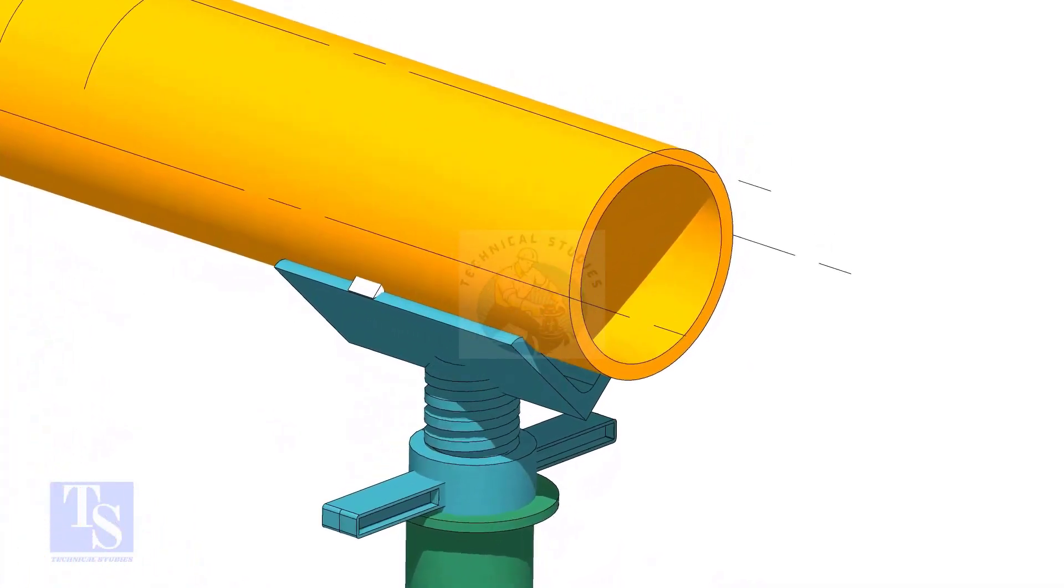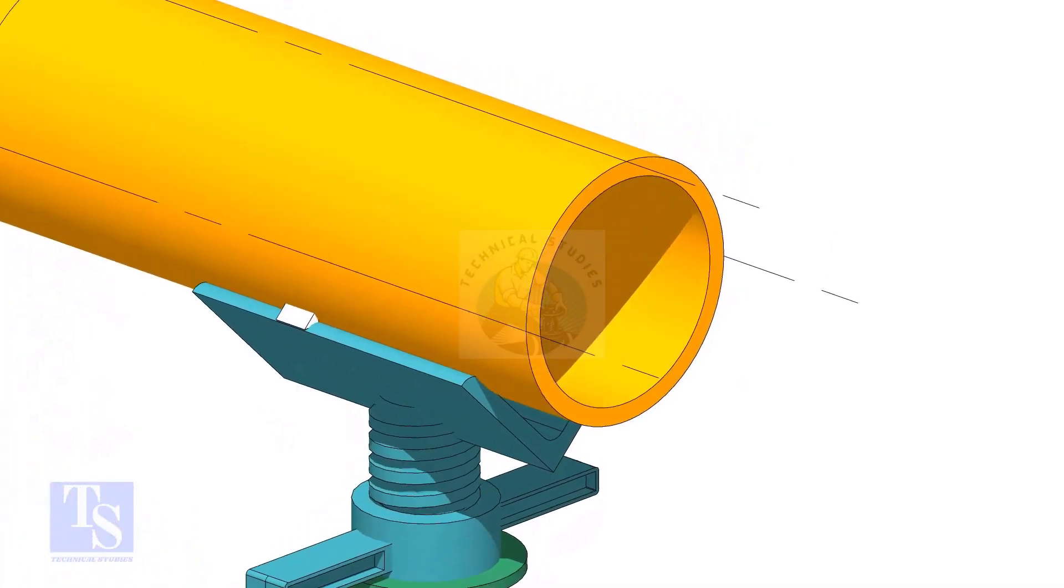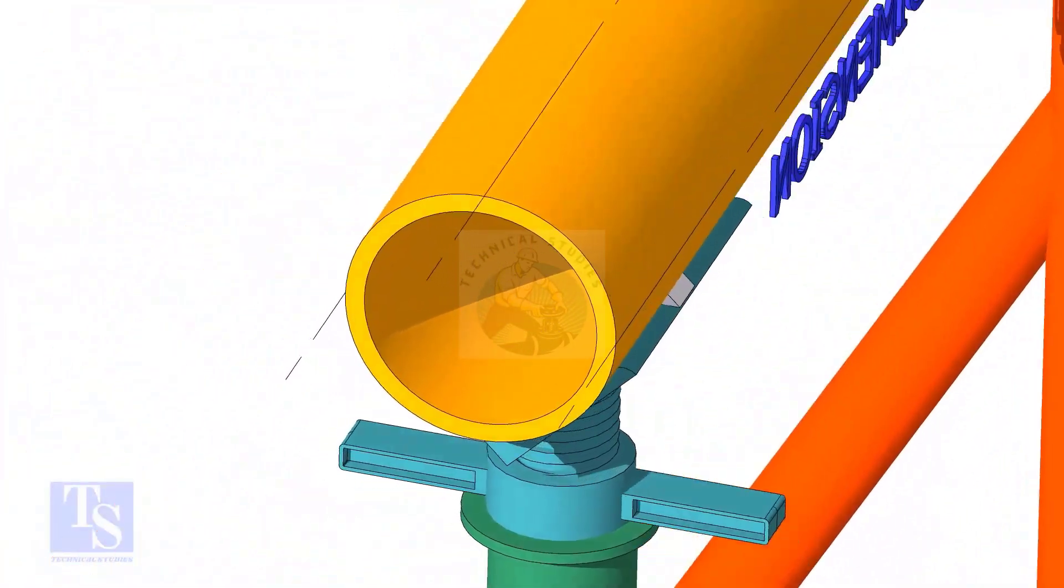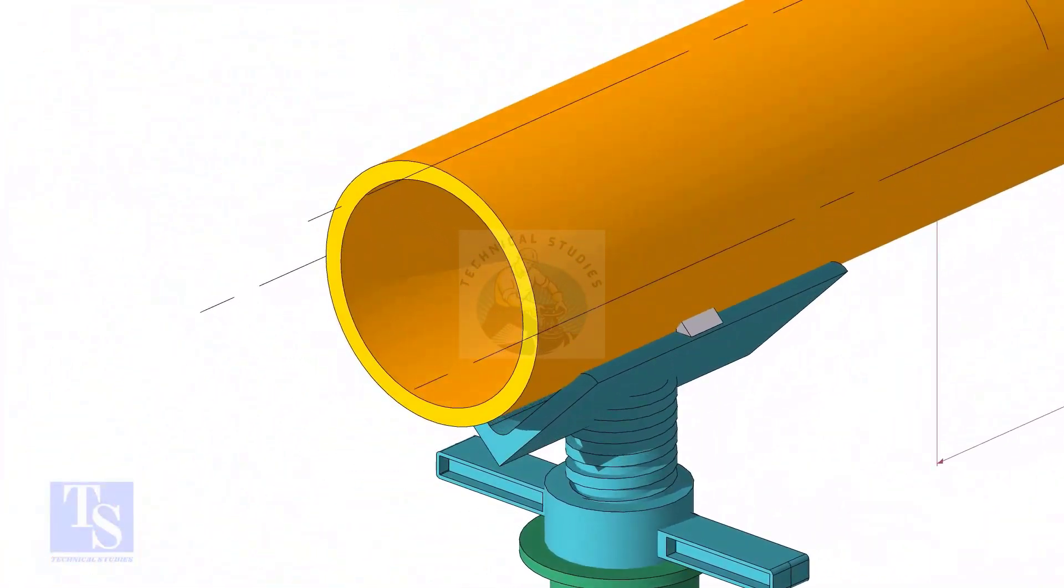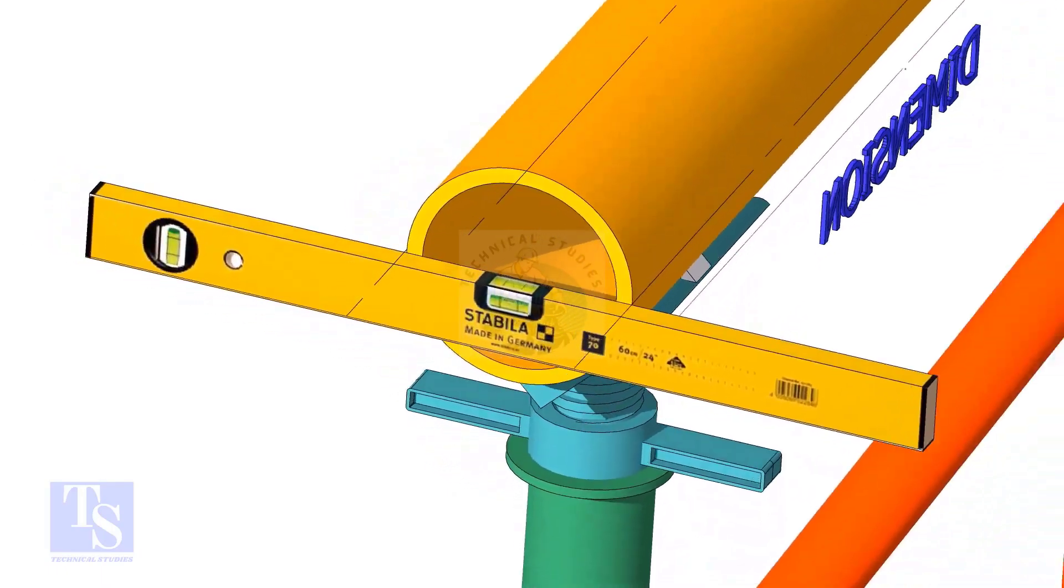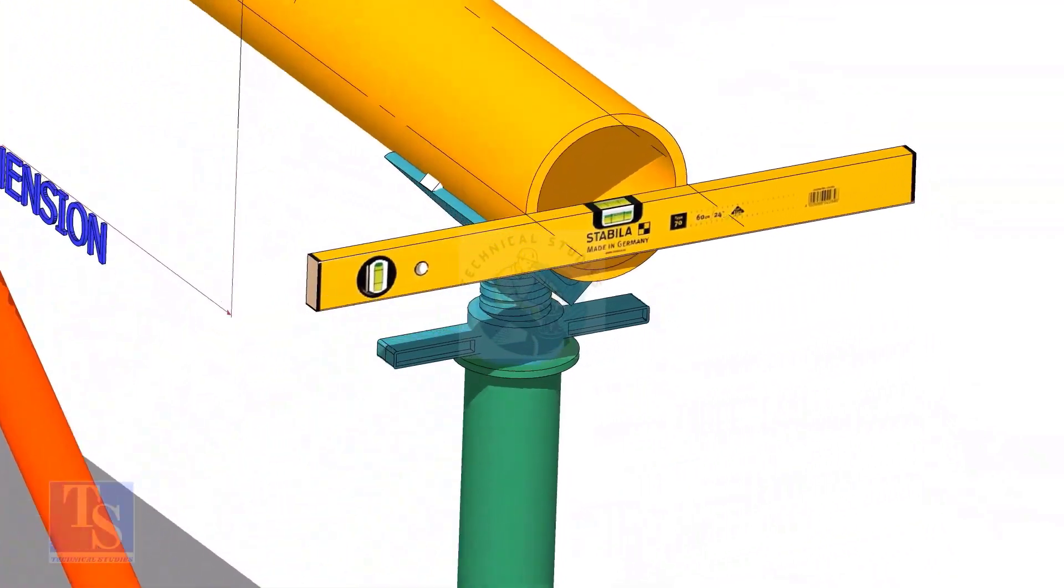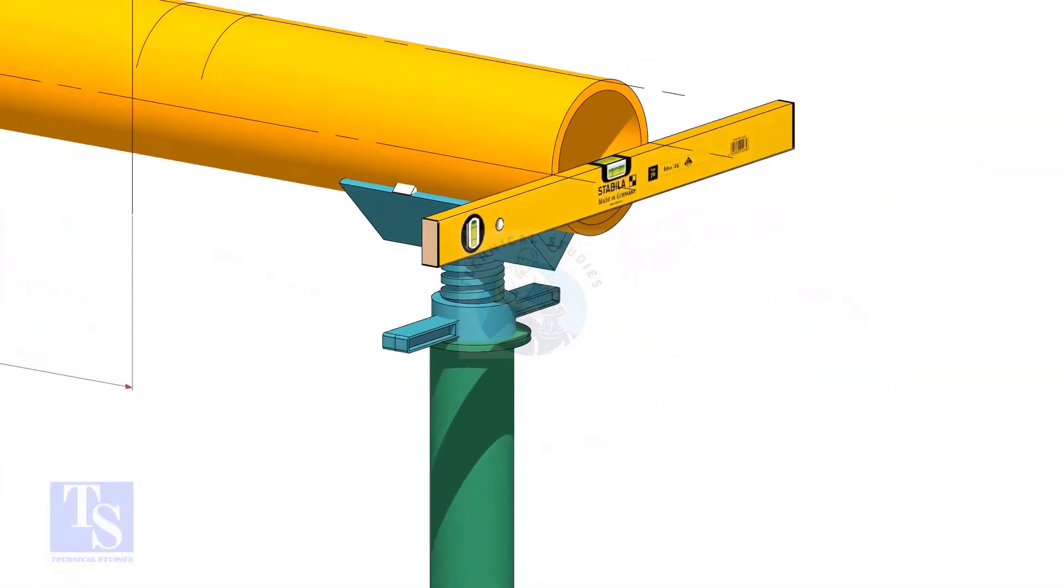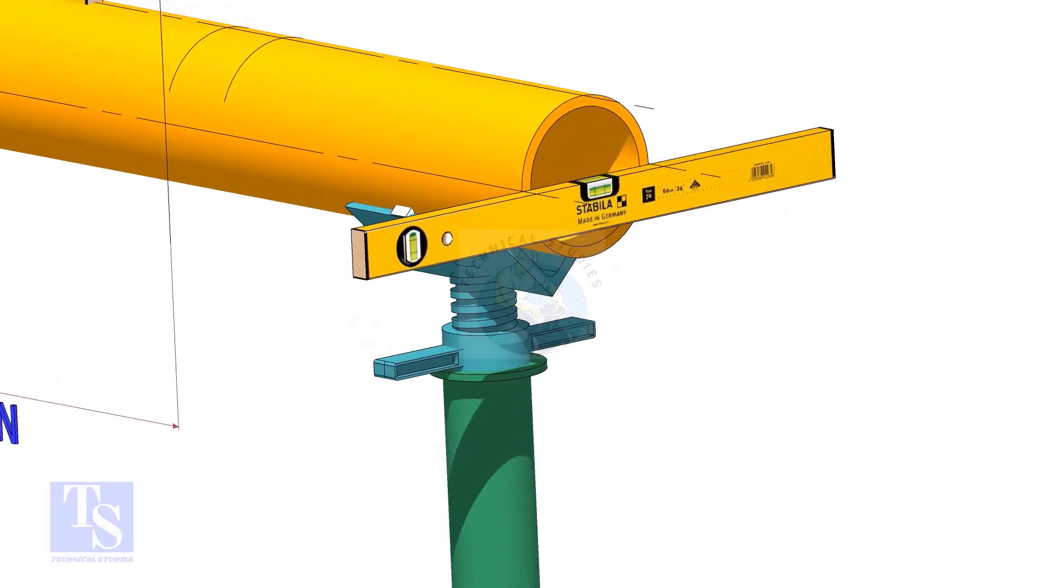After leveling the pipe, mark the center line and two quarter lines. Arrest the pipe. If required, make small tack welds.